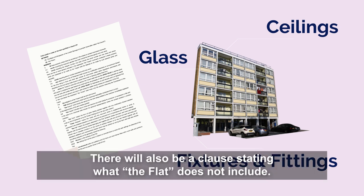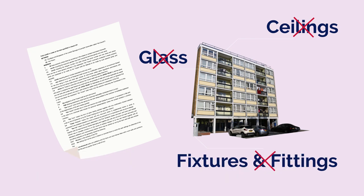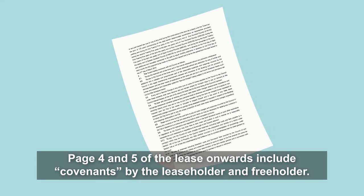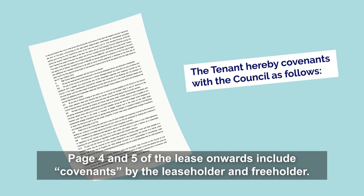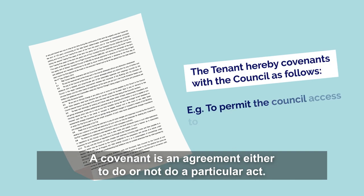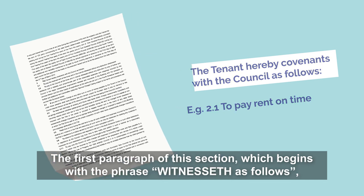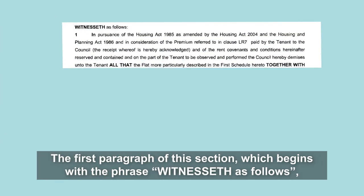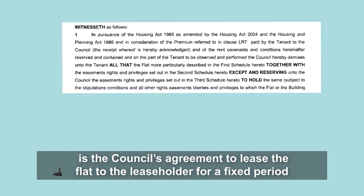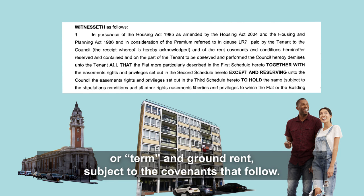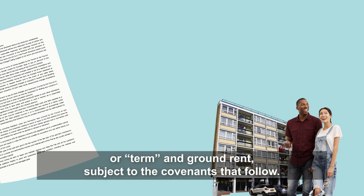There will also be a clause stating what the flat does not include. Pages 4 and 5 of the lease onwards include covenants by the leaseholder and freeholder. A covenant is an agreement either to do or not to do a particular act. Each covenant is numbered. They are important because anyone not following them is breaching the terms of the lease. The first paragraph of this section, which begins with the phrase 'witnesseth as follows', is the council's agreement to lease the flat to the leaseholder for a fixed period or term and ground rent, subject to the covenants that follow.